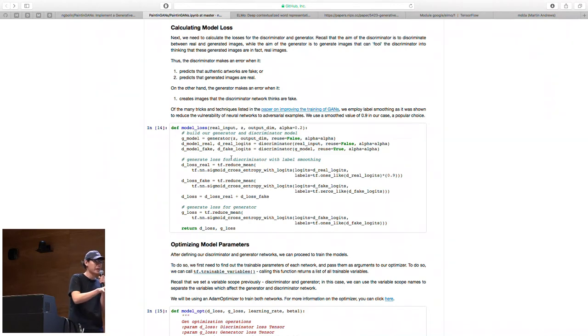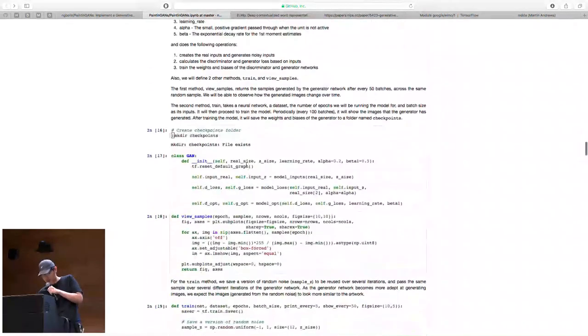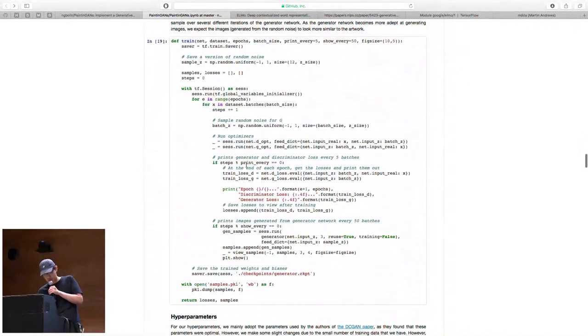One, thinking that the generated images are true, and two, from the training images, thinking that it's false. So using that idea, you can come up with the loss function. This was trained under TensorFlow.